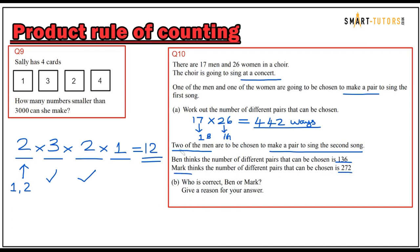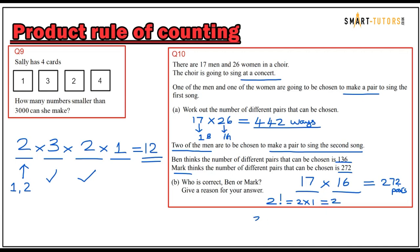Choosing two men: the first man is chosen from 17 options, and the second from the remaining 16 men. Seventeen times sixteen is 272 pairs. However, there are duplicates because both are from the same group, so divide by two factorial — two times one is two — giving 272 divided by two.